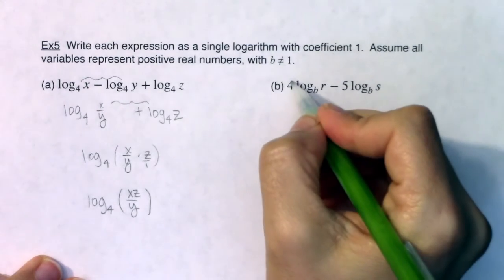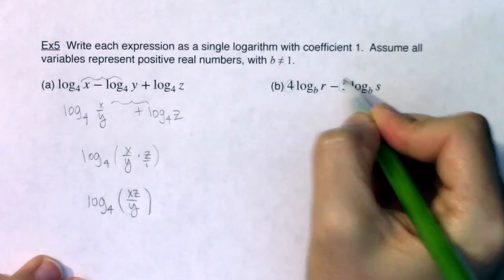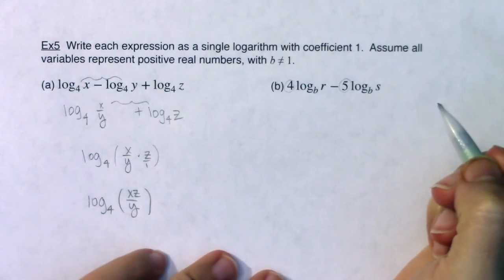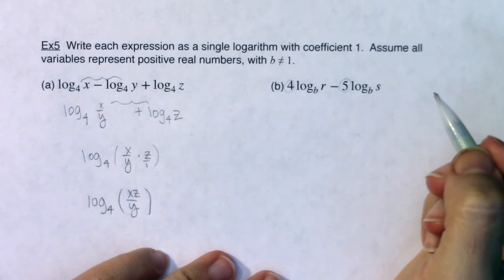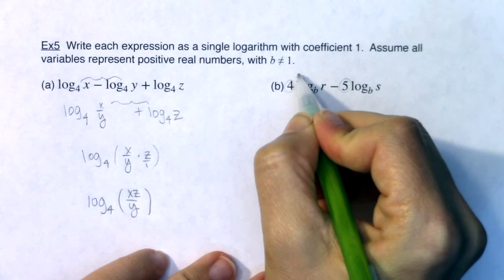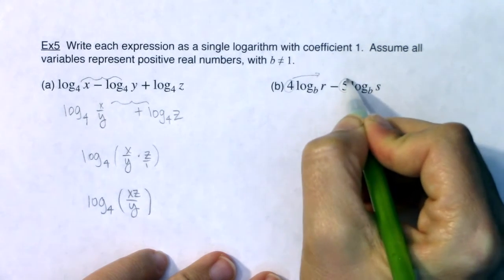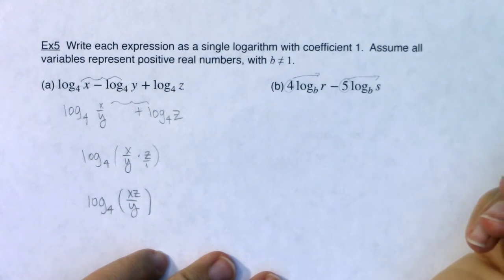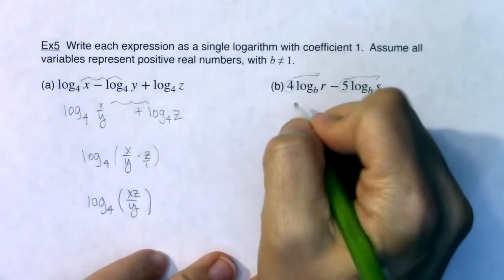Now over on part b, you can see that I have some coefficients right out the gate. I have a four in front of that first logarithmic term and a five in front of that second logarithmic term, so I'm going to use the power rule for logarithms and move both of these coefficients up as a power on our argument.